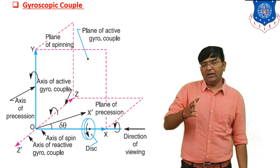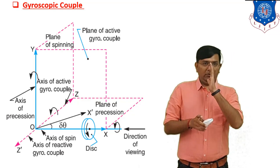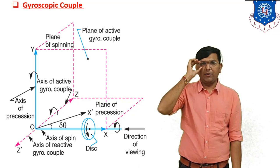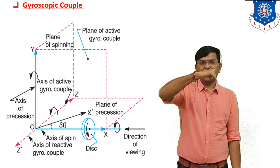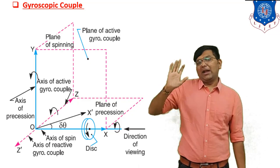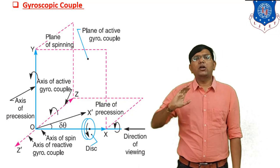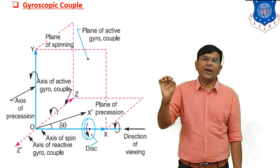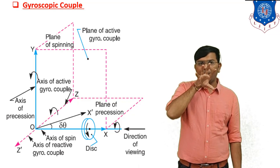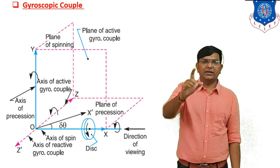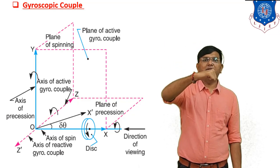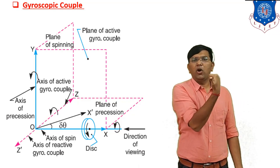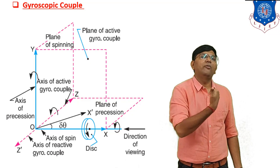Whenever you visualize the disk from the front side, if the disk rotates in the anticlockwise direction, you put your fingers in the anticlockwise direction and your thumb indicates the direction of angular momentum. Angular momentum is the product of moment of inertia and angular velocity, that is I×ω. Similarly, if the rotor rotates in the clockwise direction, put your fingers in the clockwise direction and the thumb indicates the direction of angular momentum.